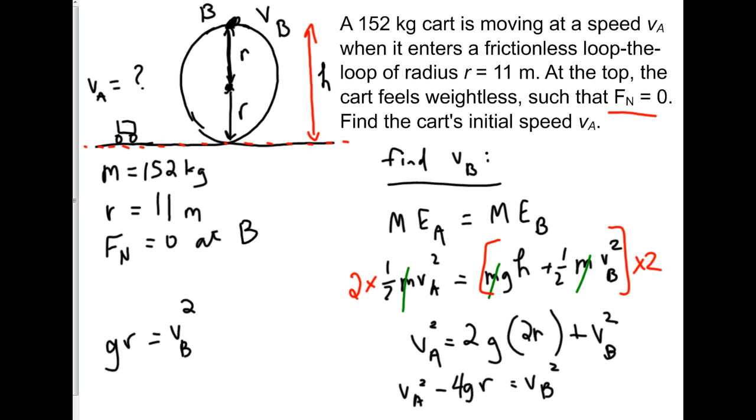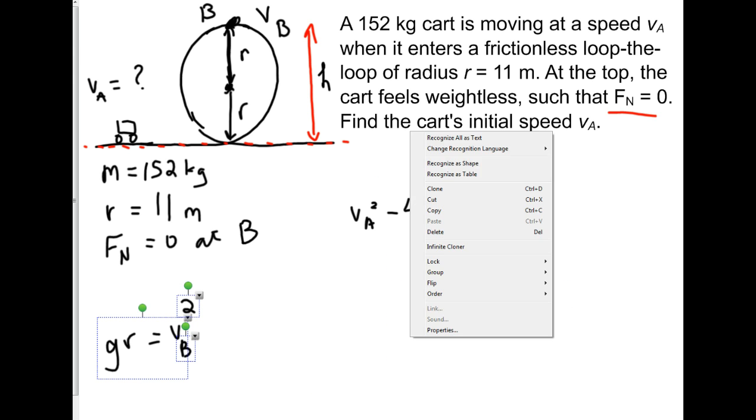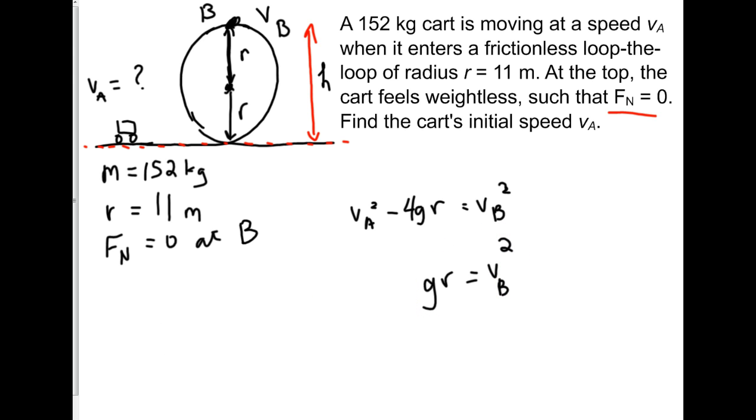And now I can erase my work. We see why, we see the next step, we see the next thing to do. So if we have this equation and we have this equation, if this equals v_b squared and this equals v_b squared, then the two things in red are equal to each other, right? Which means v_a squared minus 4gr equals gr. So if I add 4gr to both sides, now I have 5gr on the right. And I can clearly and easily solve for the initial velocity.